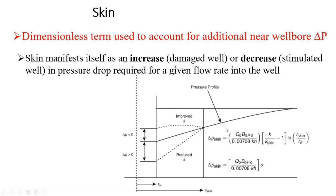If we have our pressure profile and there is no skin, this is the path it is going to follow. But if there is a skin, it either goes up or it goes down, depending on whether it is damaged or stimulated. If it is damaged, there is an extra pressure drop that causes the pressure profile to increase in slope. But if the well has been stimulated, the permeability around that zone has been increased — the fluid gets to this zone and it flows faster.